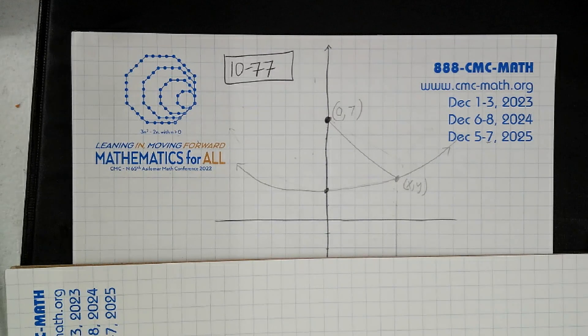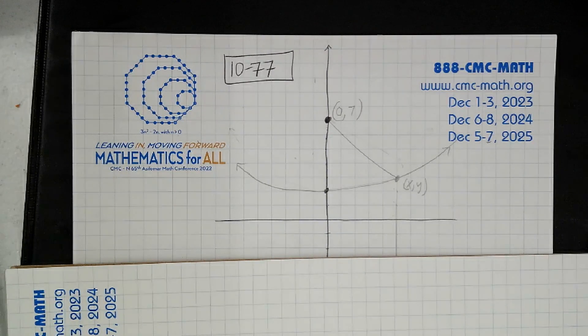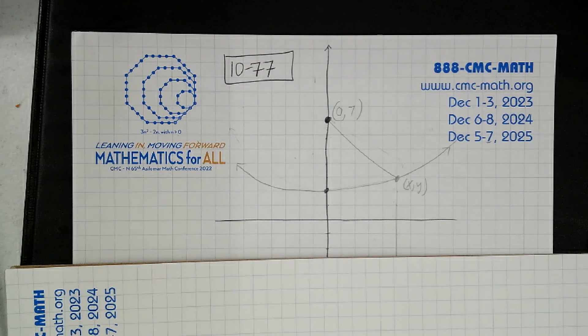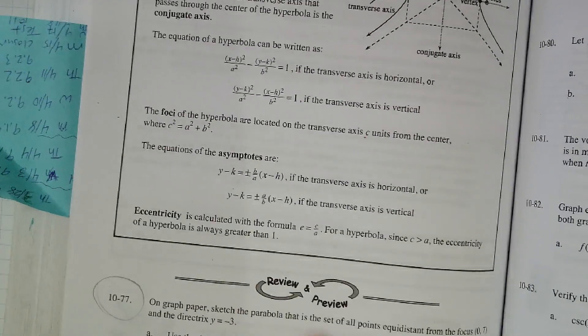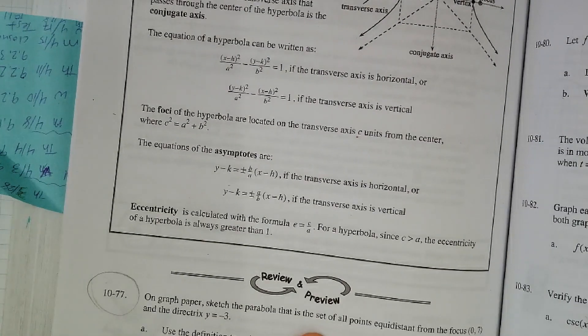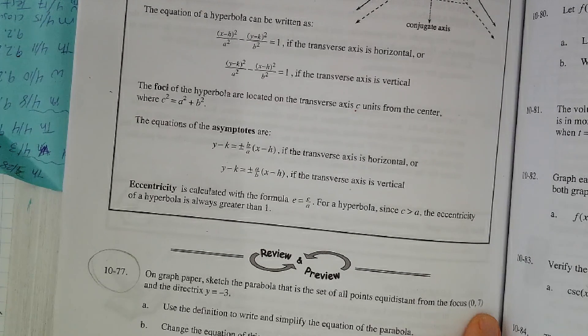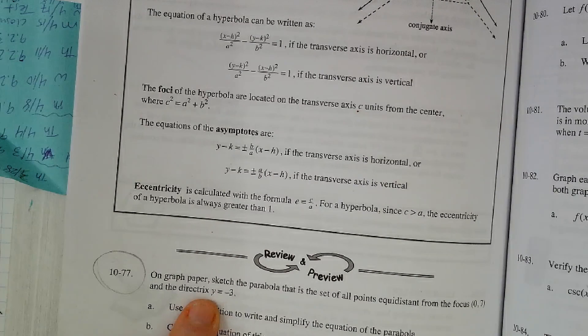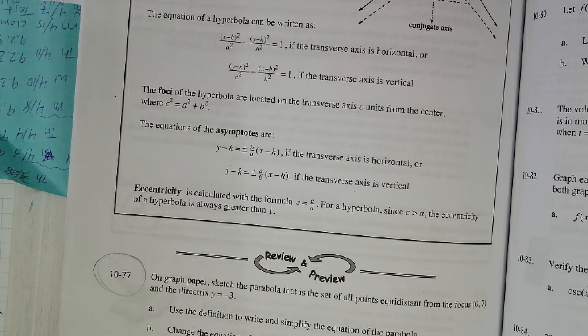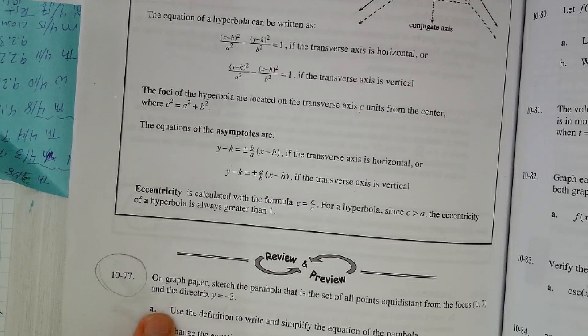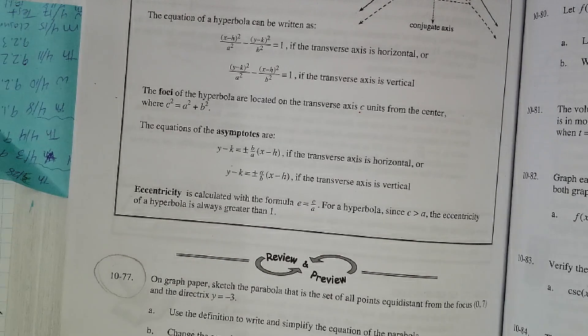Here's pre-calc, this is problem 10-77 and it says on graph paper sketch the parabola that is the set of all points equidistant from a focus (0, 7) and a directrix y equals negative 3.